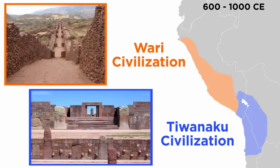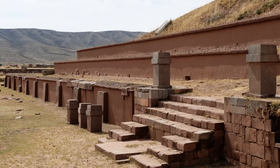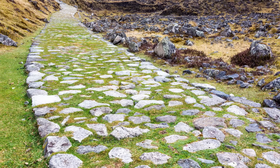The middle horizon, 600–1000 CE, saw the beginning of powerful states with large areas of influence and control in the Andean region. Specifically, two civilizations came to dominate: Wari and Tiwanaku. Both states had capital cities of over 50,000 people. Tiwanaku's capital is famous for its incredible megalithic architecture and unique alpine lake environment. These people began to develop road networks, connecting major urban centers and religious sites throughout the Andean region.